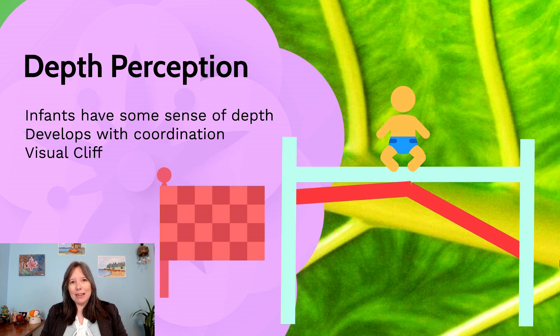And what would happen is under the glass tabletop, there would be a wooden tabletop in which the tablecloth was laid. And the infant would be placed in the center of the table. On one side, below the glass surface, they could see the checker pattern going down on a gradual incline.